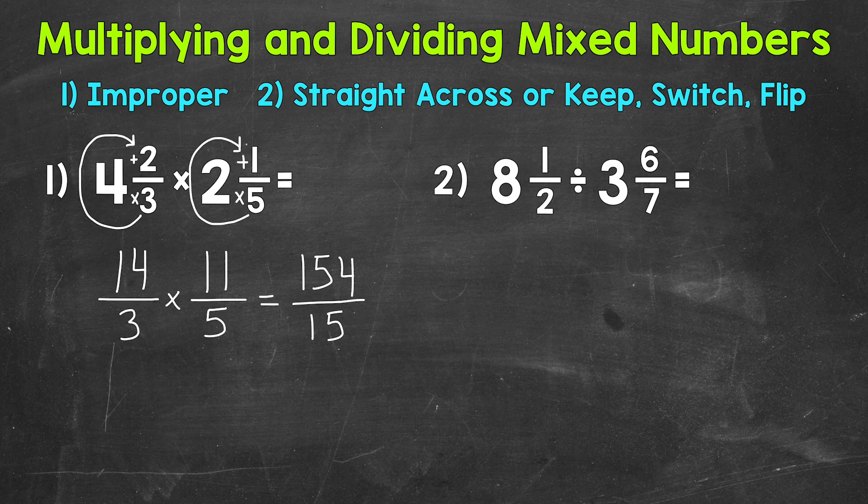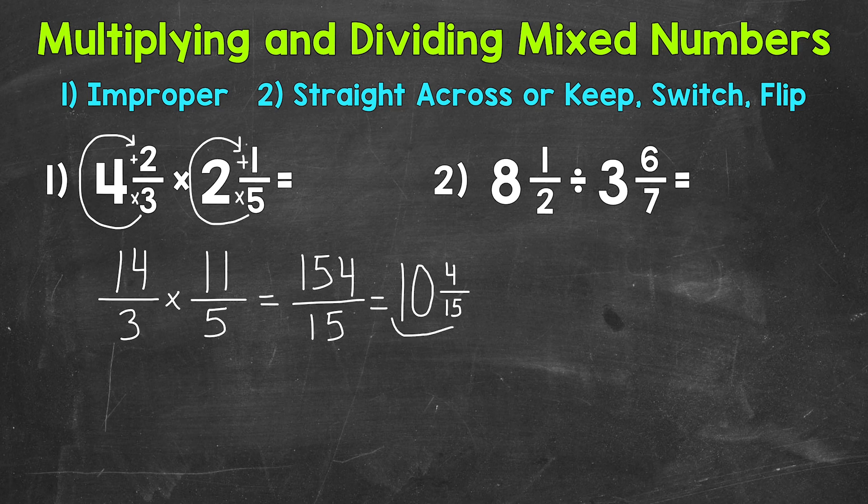That's an improper fraction, so we want to convert this back to a mixed number for our final answer. We do that by dividing 154 by 15. How many whole groups of 15 can we pull out of 154? Well, 10. That gets us to 150. We did not hit 154 exactly. We had a remainder of 4, so that's our numerator, and we keep our denominator of 15 the same. Always look to see if you can simplify the fractional part. 4 15ths. The greatest common factor between 4 and 15 is 1, so this is simplified. 10 and 4 15ths.